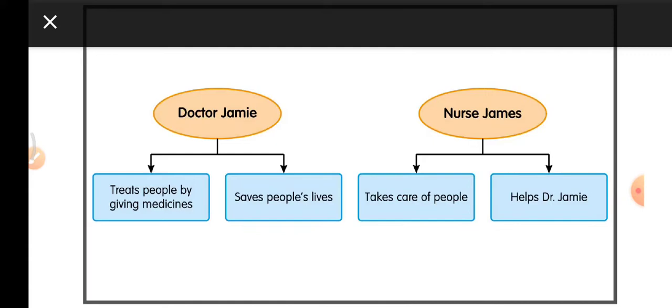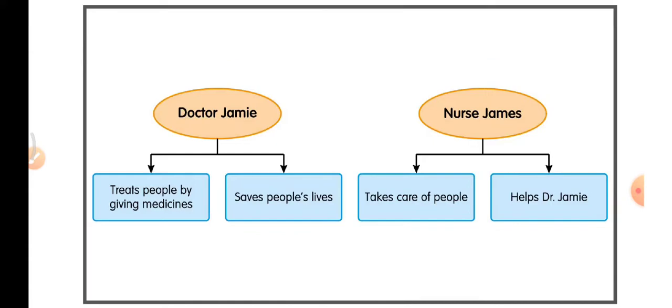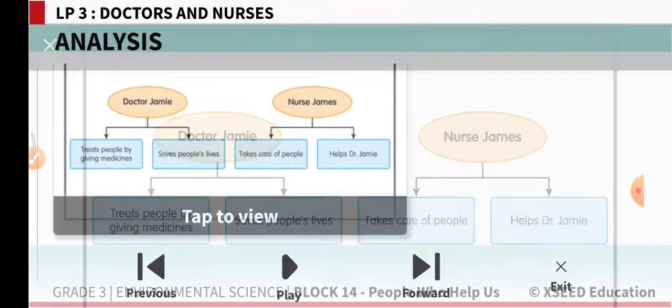Here is a flowchart which we are going to draw in our book. Dr. Jami: treats people by giving medicines and saves people's lives. Nurse James: takes care of people and helps Dr. Jami.